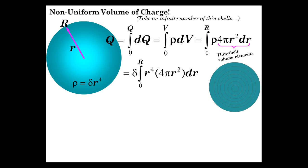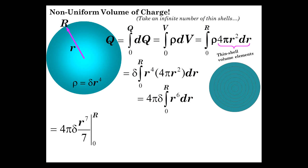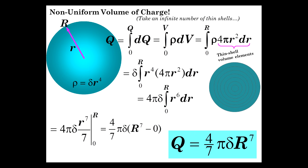We carry out this integral, bringing the constant δ out, along with 4π. We have the integral of r to the sixth, which gives us r to the seventh. The total charge of the sphere comes out to 4/7 π δ R⁷.